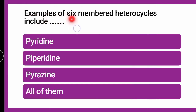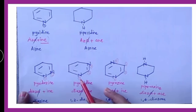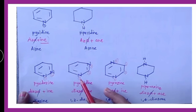Next question: examples of 6-membered heterocycles include — pyridine, piperidine, pyrazine, or all of them? The correct answer is all of them. Pyridine is an unsaturated 6-membered ring containing only one heteroatom. Pyridazine contains two nitrogen atoms at positions 1 and 2; pyrimidine at positions 1 and 3; pyrazine at positions 1 and 4. The difference among these three is only the position of the two nitrogen heteroatoms.